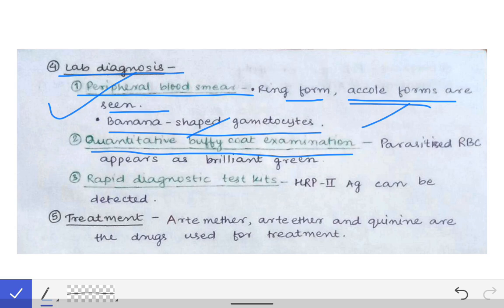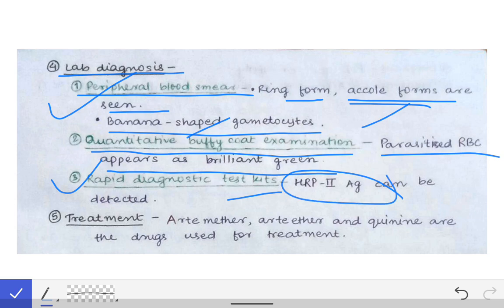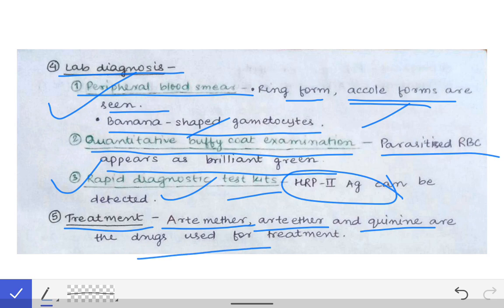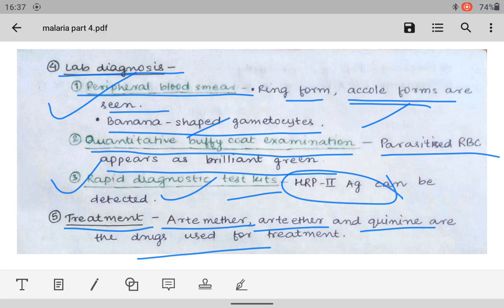We can also use the quantitative buffy coat examination, where parasitized RBCs appear brilliant green, allowing detection of Plasmodium infection. Rapid diagnostic test kits can be used as well — if a band is produced at the HRP2 antigen test line, that confirms Plasmodium falciparum infection. The treatment is ACT, artemisinin combination therapy, given with artether and quinine. This is all about cerebral malaria and both topics.